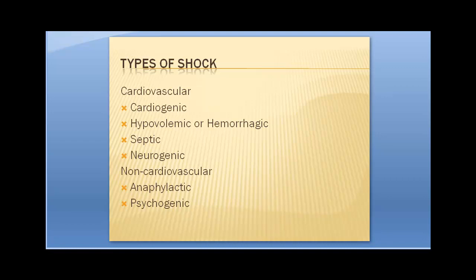Then you have neurogenic shock, which is damage to the spinal cord. The example often used is Christopher Reeve — the 80s Superman — who was thrown from a horse and broke his neck around C1-C2. Not only did it shut down respiration, but he went into widespread vasodilation and went into shock because there wasn't enough blood pressure to pump blood around. The vessels were too large — they just relaxed.